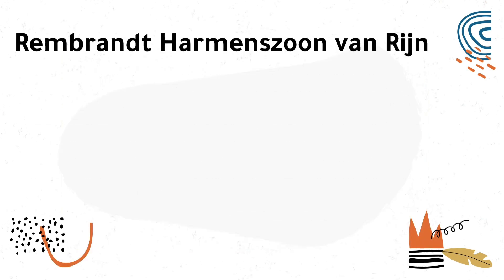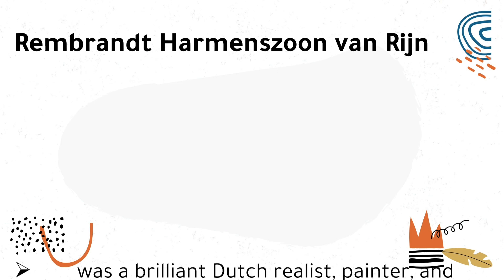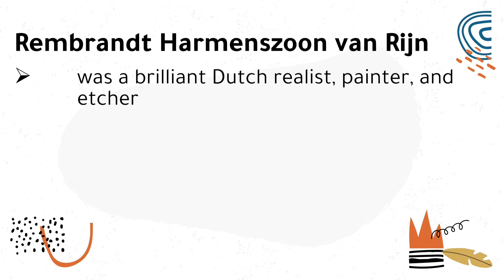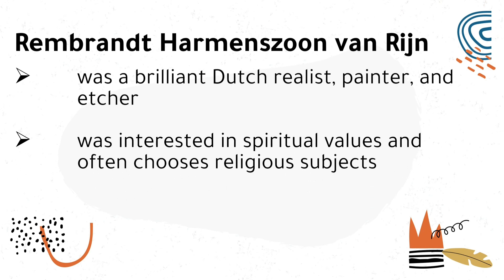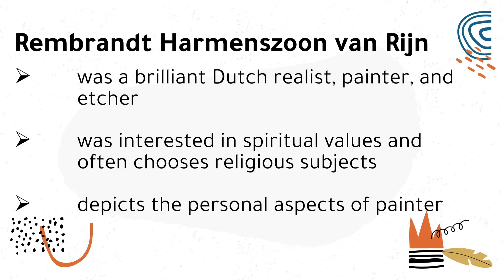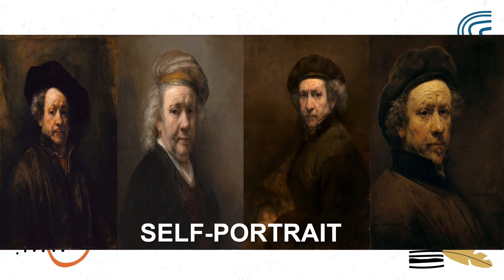The next Baroque artist is Rembrandt Harmenzoon van Rijn, a brilliant Dutch realist painter and etcher who often chose religious subjects. Similar to Rubens, his subjects were also personal — his home and his family. No other artist has painted himself as often as Rembrandt. His well-known artwork is the Self-Portrait in Old Age.